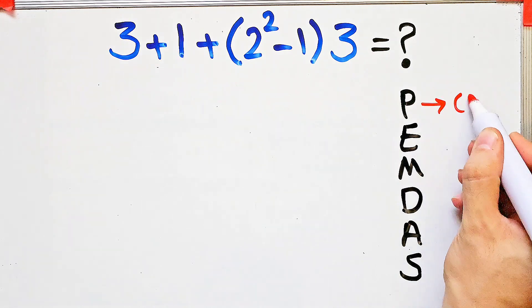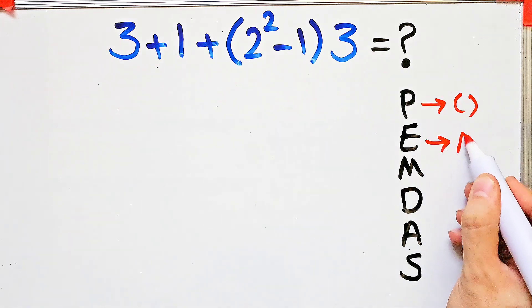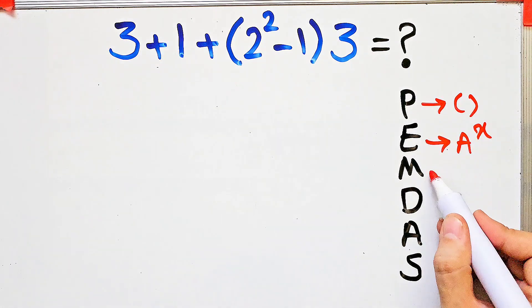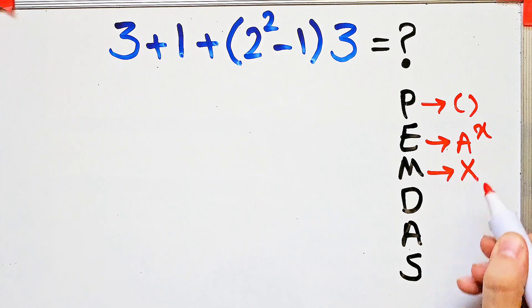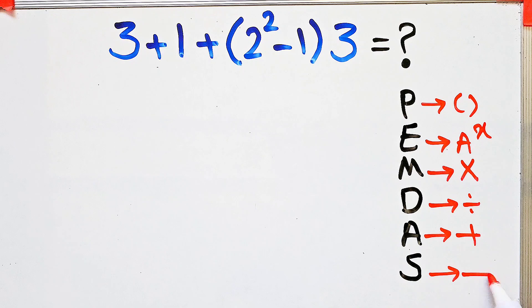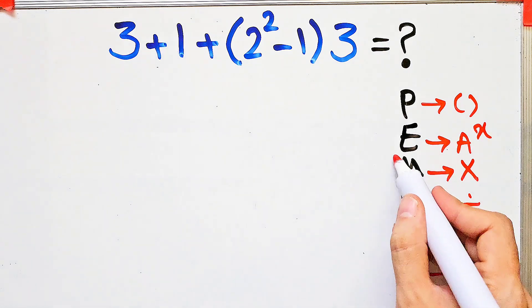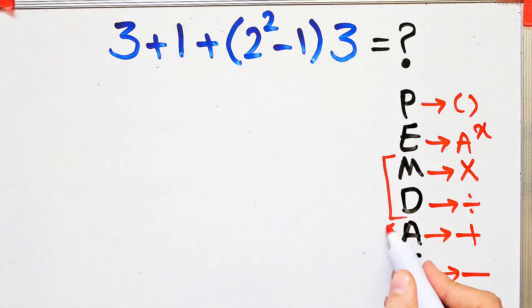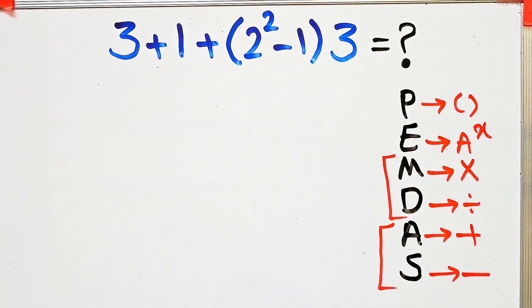E stands for exponent, M stands for multiplication, D stands for division, A stands for addition, and S stands for subtraction. Multiplication and division have the same level of priority. Also, addition and subtraction have the same priority.